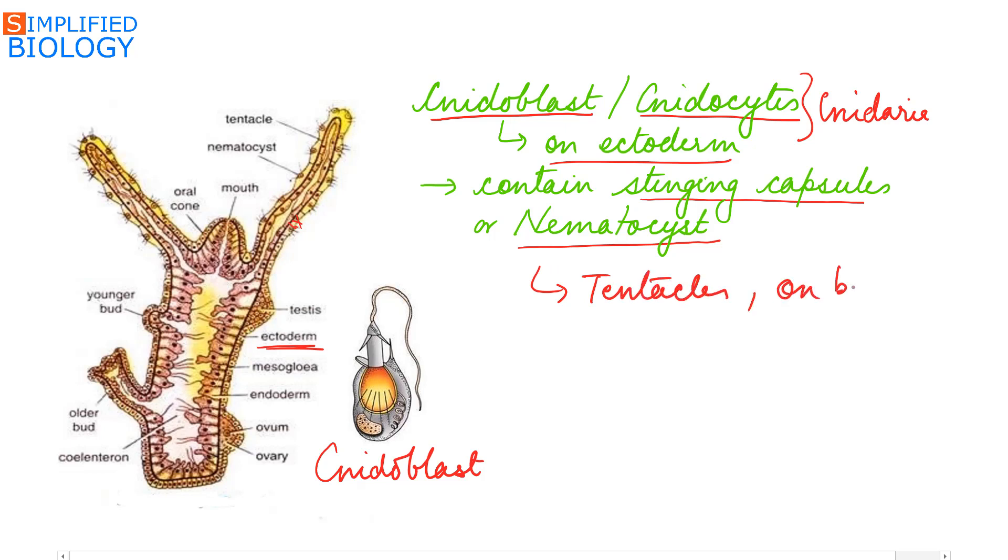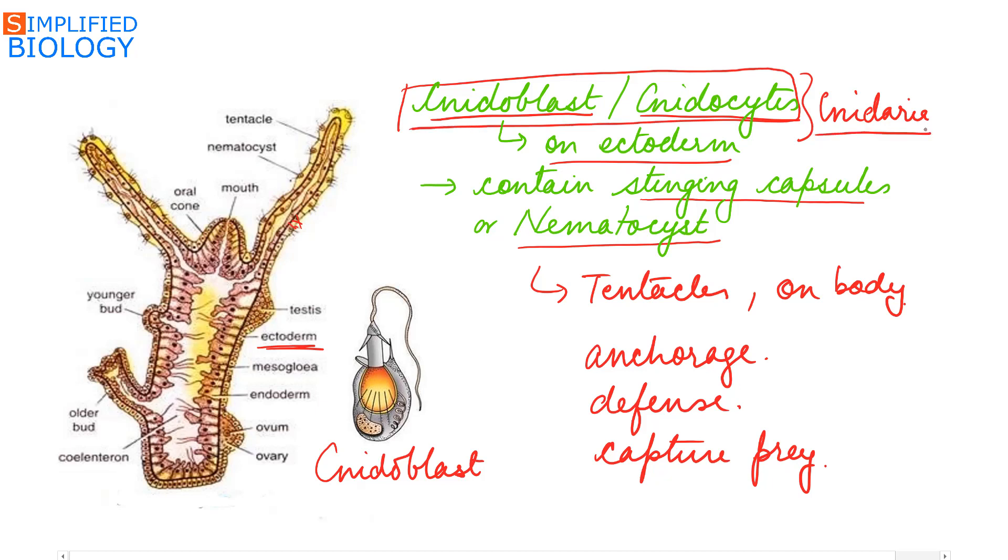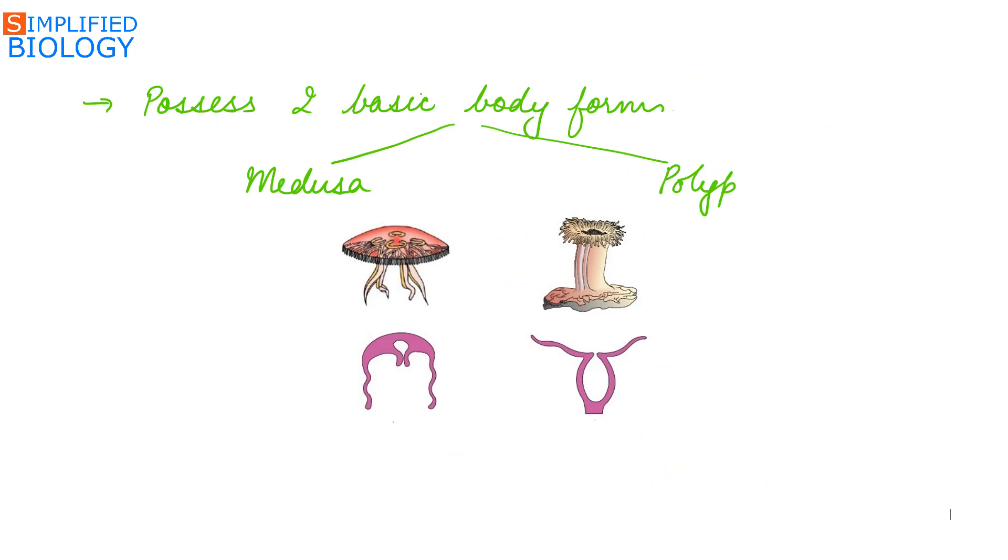They are present at the tentacles and also throughout the body. They act as organ of anchorage, means they help in attachment, play a role in defense, and also help to capture prey. So cnidarians possess cells called cnidoblasts or cnidocytes through which they got the name Cnidaria.